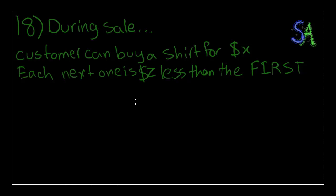During a sale, a customer can buy one shirt for X dollars. Each additional shirt the customer buys costs Z dollars less than the first shirt. For example, the cost of the second shirt is X minus Z dollars. Which of the following represents the customer's cost in dollars for N shirts bought during the sale?